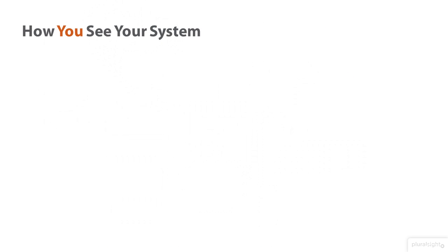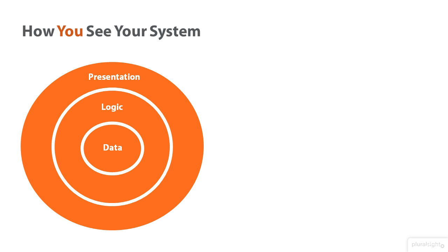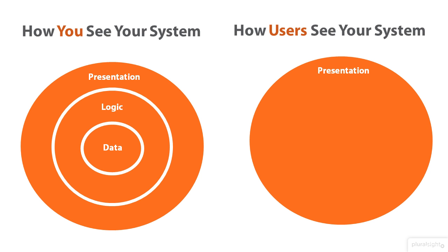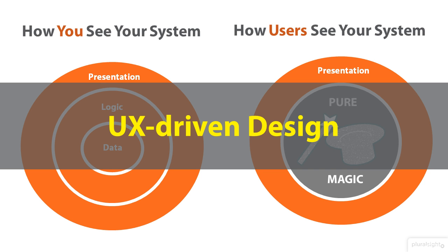As a developer or an architect, you typically have a clear idea of what the final system should be and how it should work. It's obvious for you what is presentation, what is logic, and what is data — but your users typically see it in a slightly different way. For them it's all about presentation and everything else is just pure magic. UX-driven design suggests you design software in a top-down manner, making sure you produce exactly the system that users expect to work with.